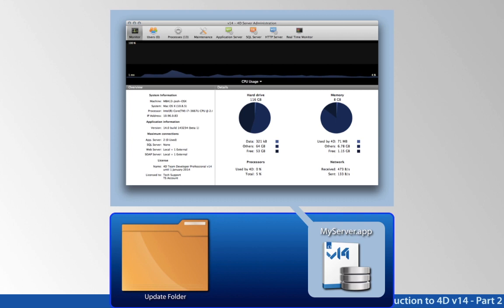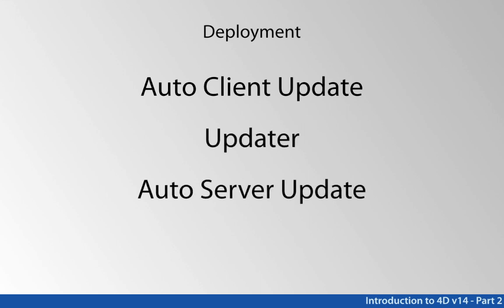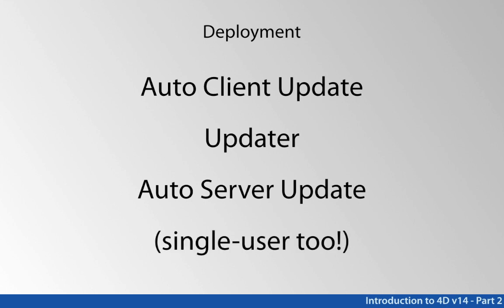An important point: with this new feature and because you've moved the data file out of the server package, the automatic update will remember the location of that data file. In the past, you may have had to choose the data file at startup when deploying a new version of the server. With the automatic update feature, it takes care of that for you. Automatic server update is based on two features: set update folder to tell it where the new server is located, and restart 4D which causes 4D to go off and do the update. You can also use automatic server update for single user applications — it's not limited to just 4D server.